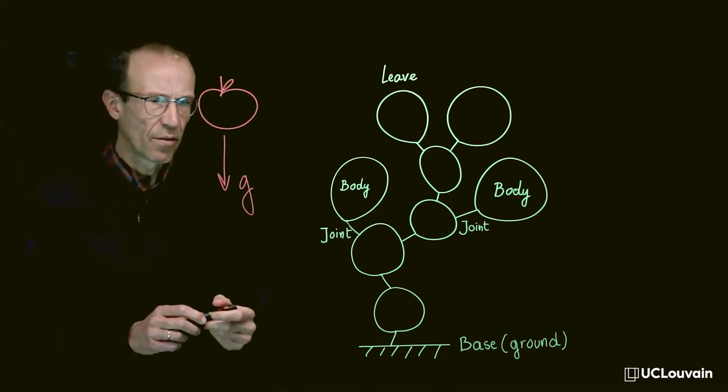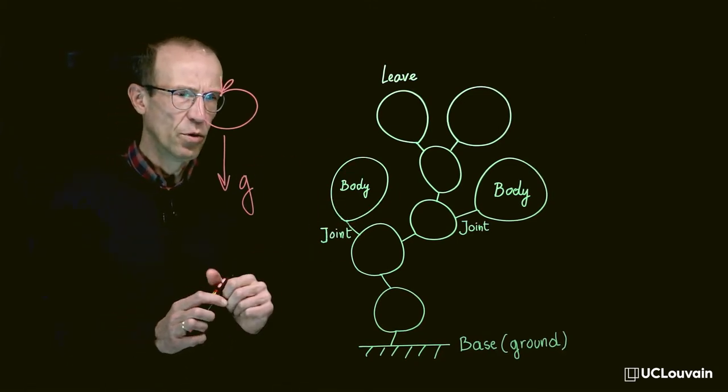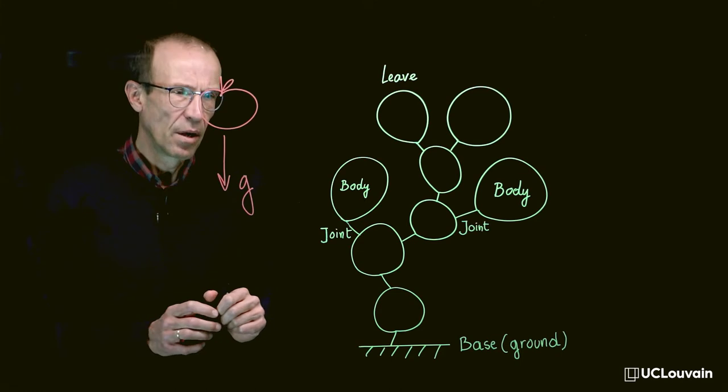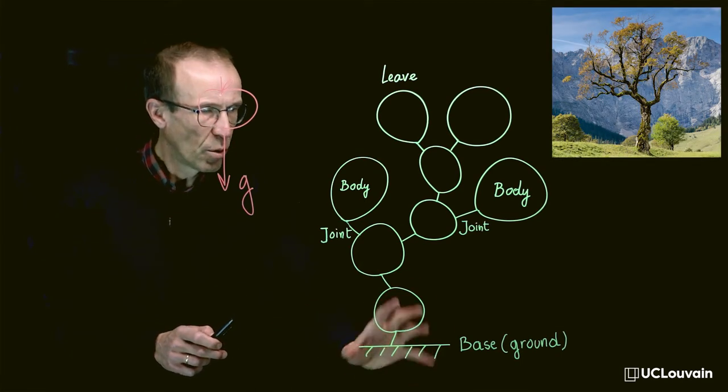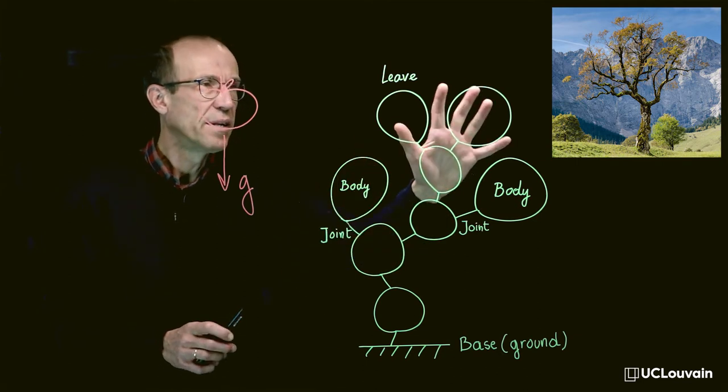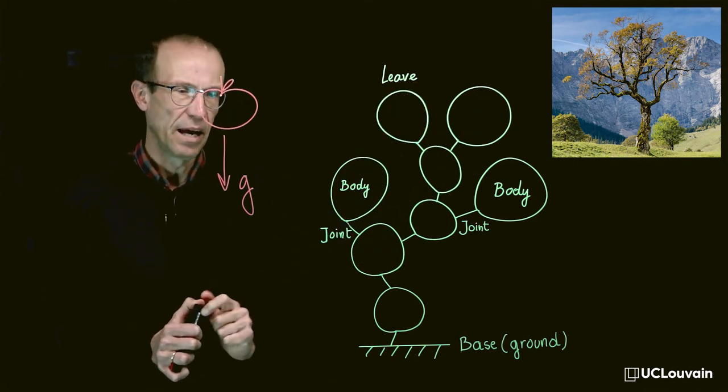Tree-like means that from a morphological point of view, those multibody systems look like a tree, starting from the ground with a trunk, branches and even leaves at the end.